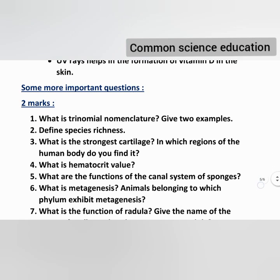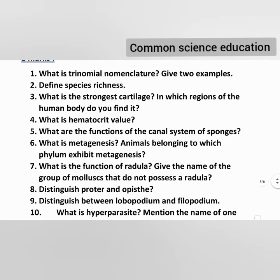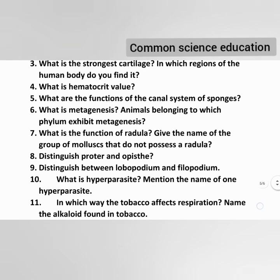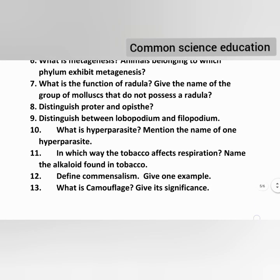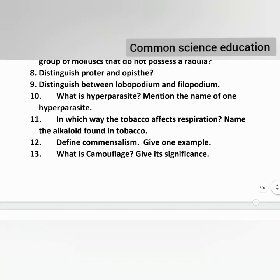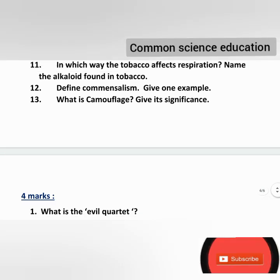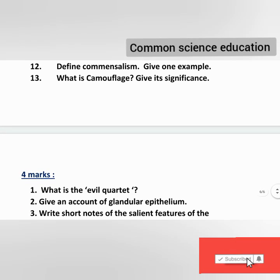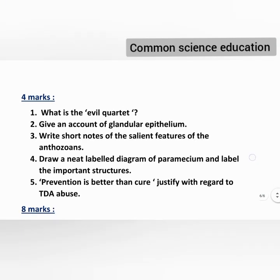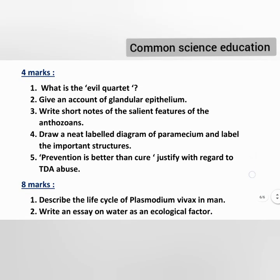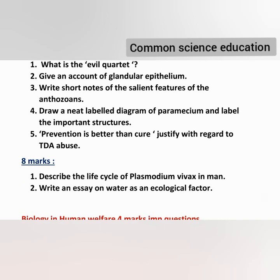There are only two examples in the textbook, and there are only two important questions. There are also very short answers — selected ones. This is an expert model paper. There are some short answers, two-marks and four-marks questions, and some more important questions: Glandular Epithelium, Arthrosome, Paramecium. The last one is the cockroach diagram, but only Paramecium and Euglena are required.